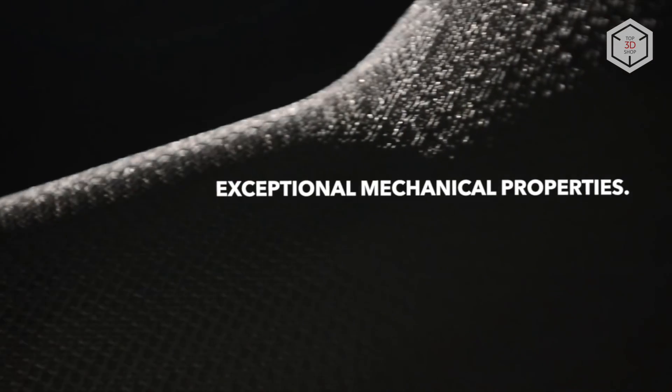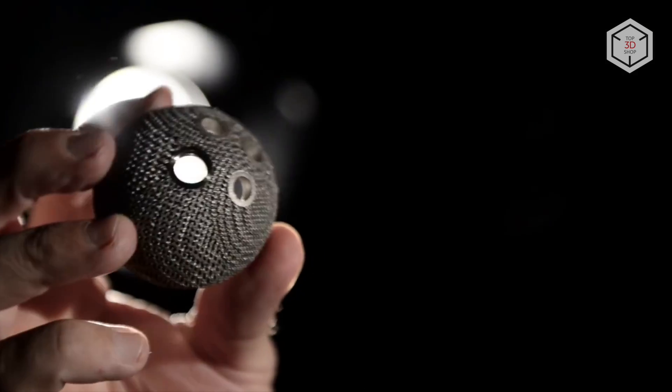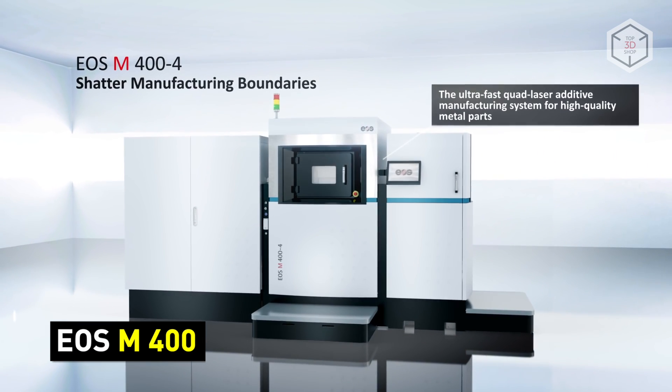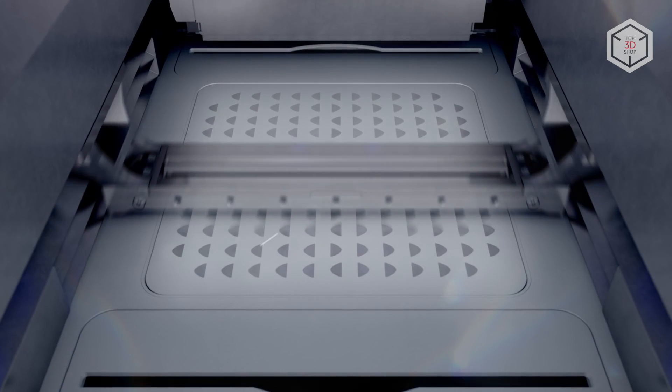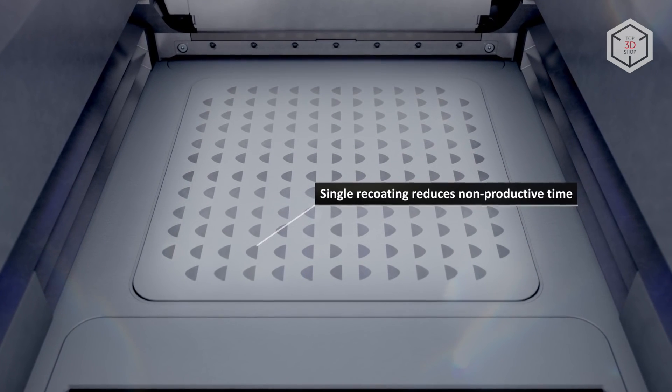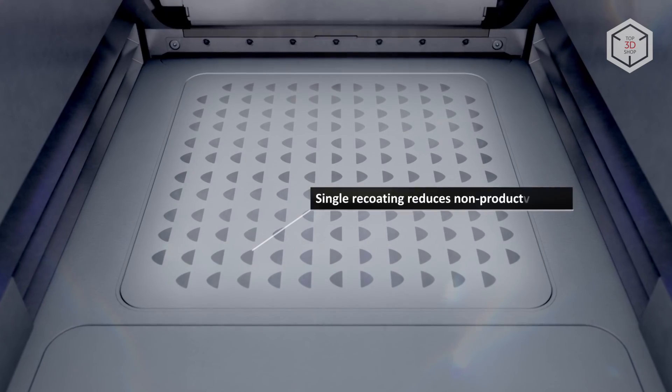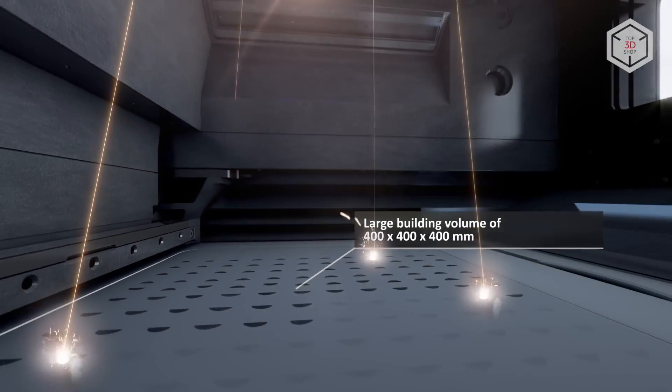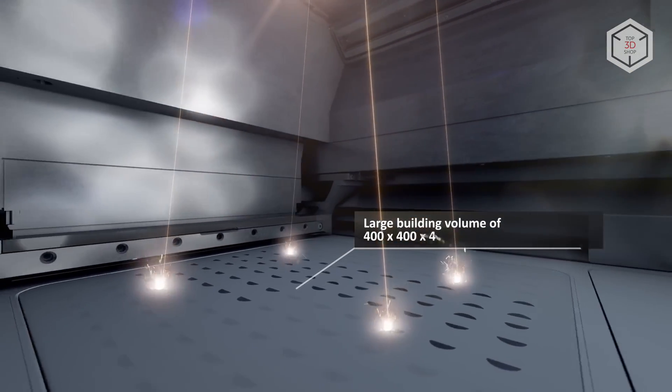The EOS M400 is an additive manufacturing machine employing a 1 kW ytterbium laser. Capable of producing items with maximum dimensions of 400 x 400 x 400 mm, the unit is ready to print in metal powders based on aluminum, nickel, titanium, and steel. The device features a modular construction, which simplifies the operation of the unit and upgrading of the entire system.